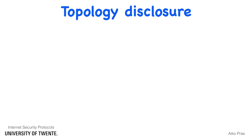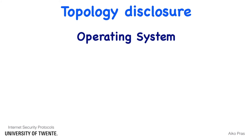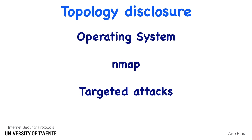Topology disclosure cannot only be used to find open ports, but also to discover which operating systems and versions are installed on specific systems. A good tool to discover this is NMAP. Traffic analysis is often followed by more targeted attacks.